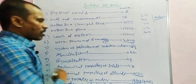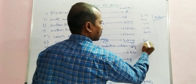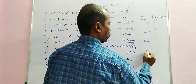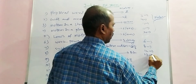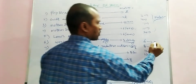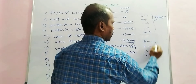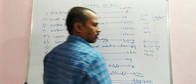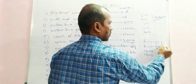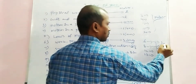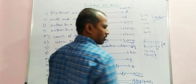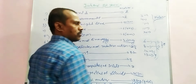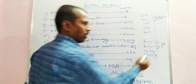For long answers carrying 8 marks, focus on lessons 6, 8, 12, and 13 — these are the chapters with 8-mark long answer questions. These cover approximately 12 to 13 weeks of study. Try to finish two topics per study session to cover all long answer material effectively.